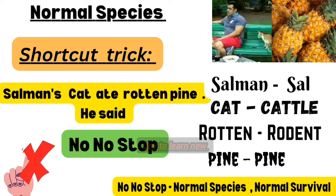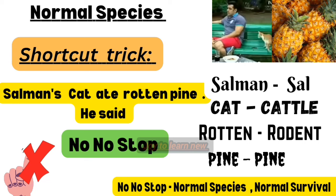Cat represents cattle. Rotten represents rotten — it rhymes with rotten. Pine represents pineapple. No no stop — N-O stands for normal species, and S stands for survival. So Sal, cattle, rotten, and pine are examples of normal species. The definition is: normal species — normal survival.